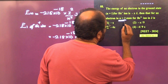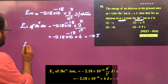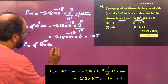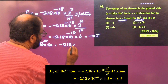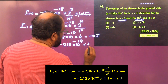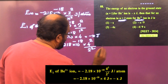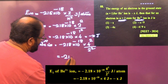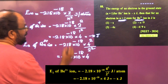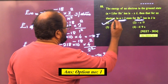Now we calculate E2 of Be3+ ion = −2.18 × 10⁻¹⁸ × 4²/2² = −2.18 × 10⁻¹⁸ × 16/4 = −2.18 × 10⁻¹⁸ × 4. These two expressions are the same, therefore E2 of Be3+ = −x joules. The answer is option number one.